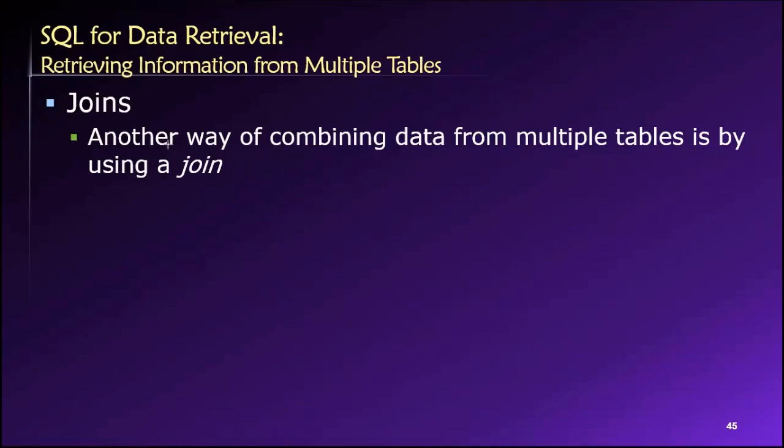Joins, as the name suggests, are going to join two tables together so that we can generate output involving data in those tables. We know that our tables are related to each other in these relationships that are constructed using matched pairs of values, these primary key foreign key relationships. And we can use those connections among the various rows in the tables in order to join rows in one table with rows in another table in order to generate some sort of useful output.